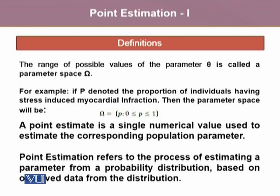The range of possible values of parameter theta is called a parameter space. For example, if p denoted the proportion of individuals having stress-induced myocardial infarction, then the parameter space will be omega, which equals p, when p ranges from 0 to 1. This parameter space omega takes on all possible values of p, which ranges from 0 to 1. We know that population proportion cannot exceed 1 and it cannot go below 0.